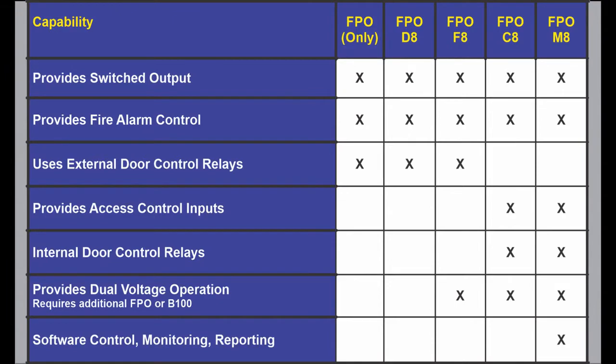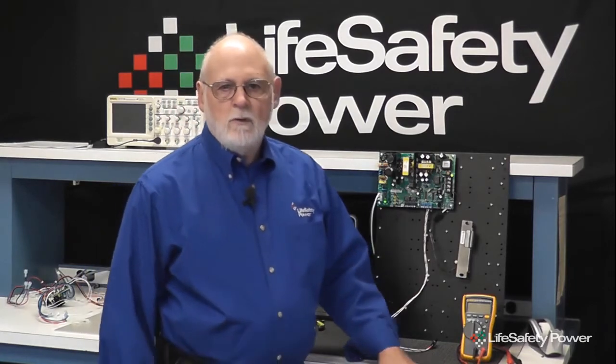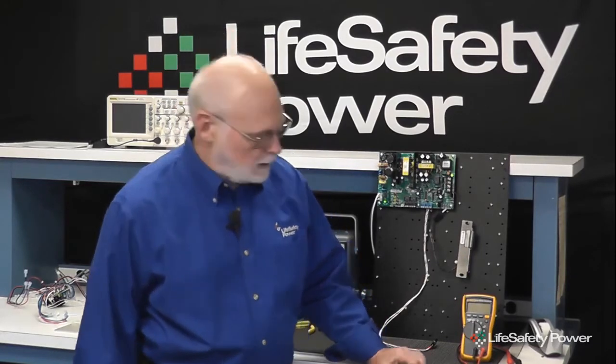We can use the FPO alone. When we use the FPO alone, we're using the fire alarm interface circuit built within the FPO. I can connect a switch contact directly to the FAI, and when I activate that switch contact, it will control the DC2 output in order to control the lock directly.